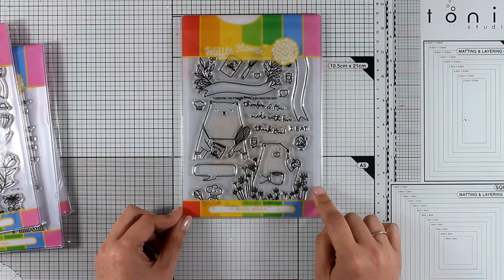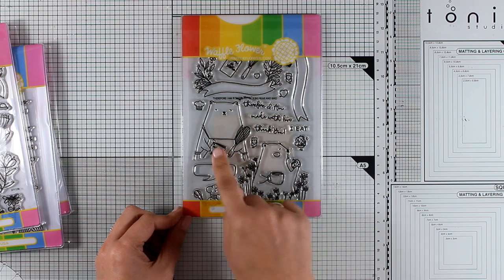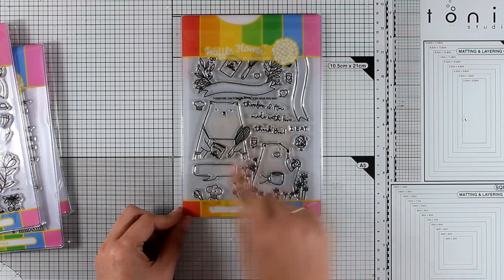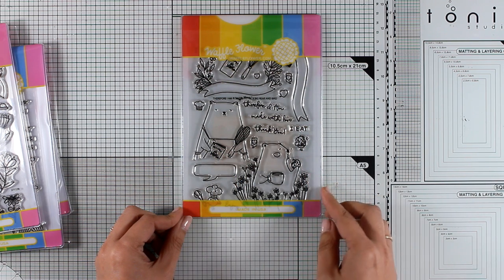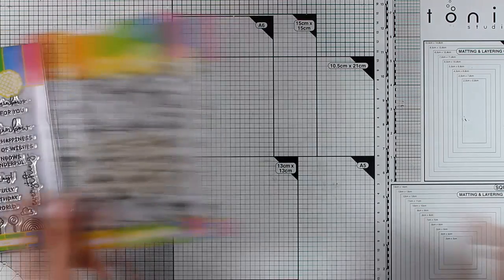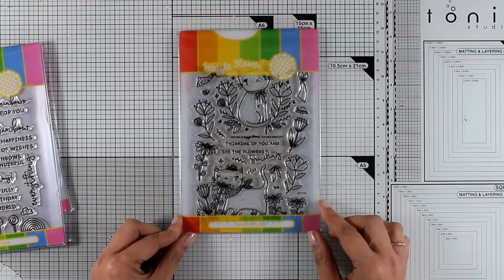This is the Therefore I Am stamp set, and again another unique design with an adorable bear. If you need inspiration on how to use all these stamps, hop along with us. You'll find tons of inspiration and great giveaways.